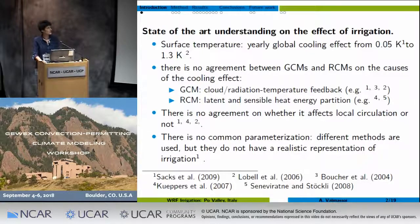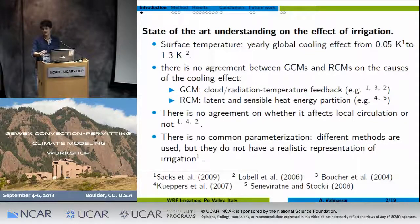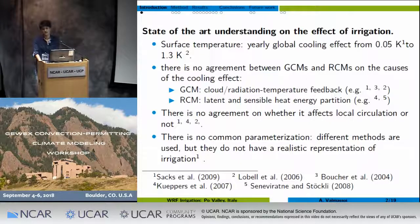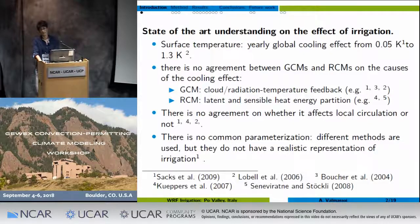Some studies about the impact of irrigation show a range of global cooling from almost zero Kelvin to 1.5 or 1.3 Kelvin in some studies. But some regions show different impacts, like the Po Valley and the Mediterranean region — in some studies the global effect is a cooling impact and in others a warming impact.